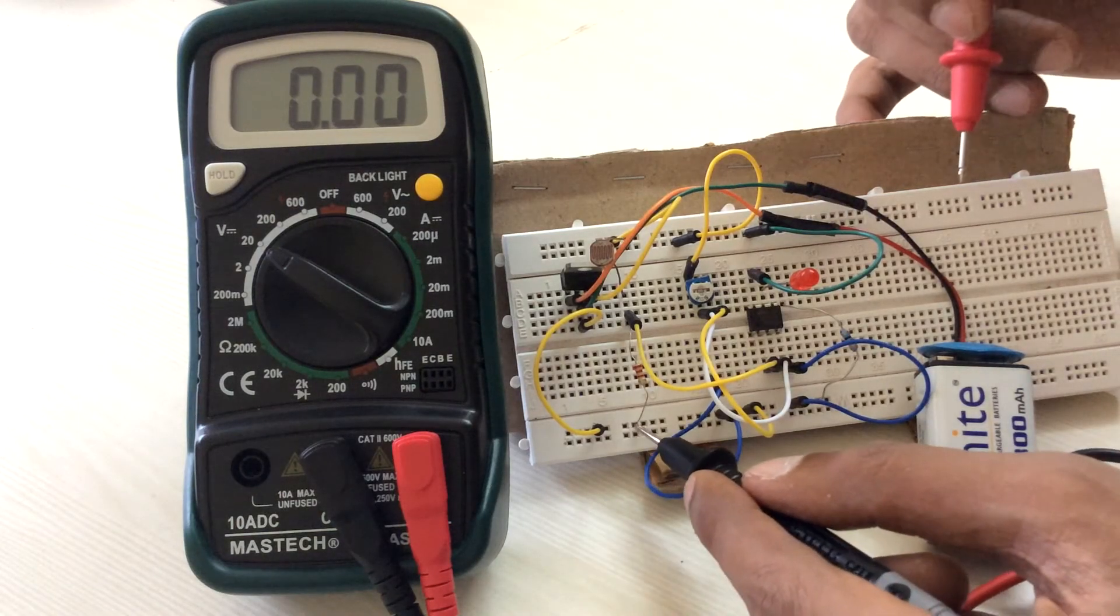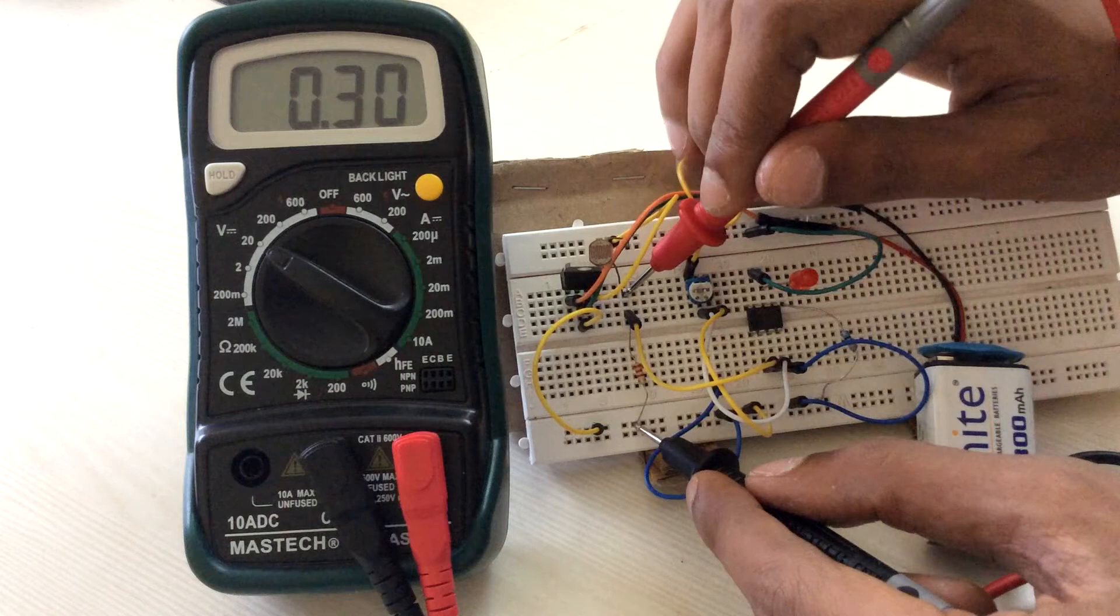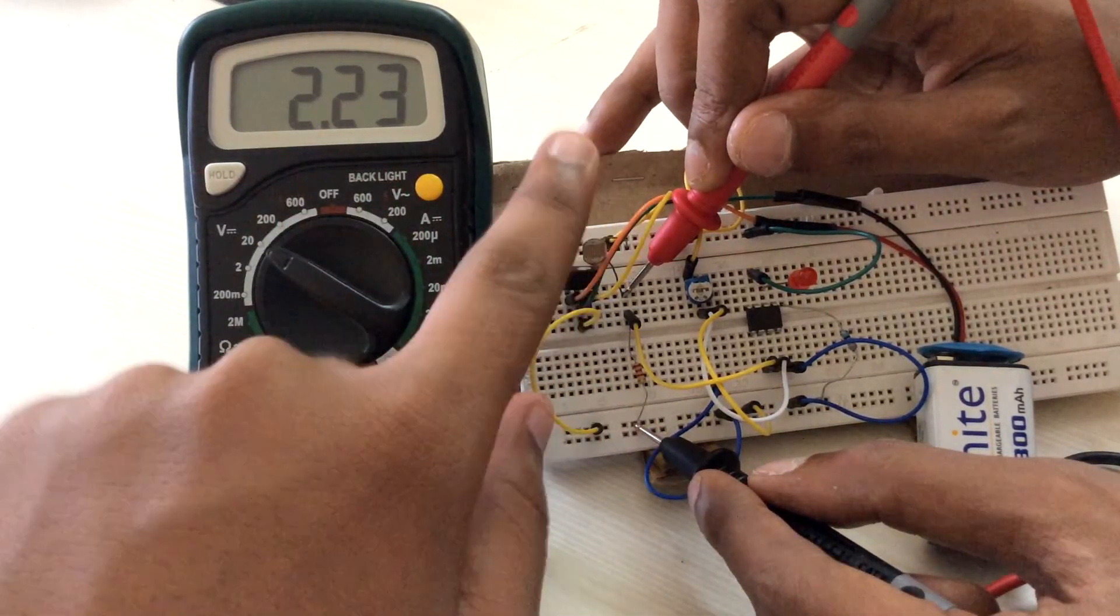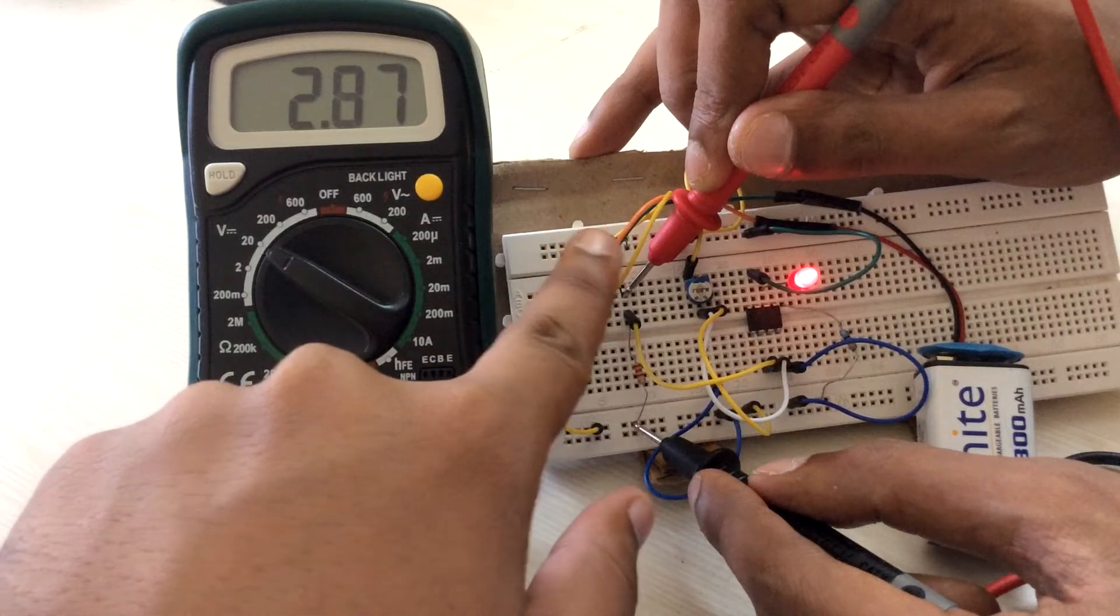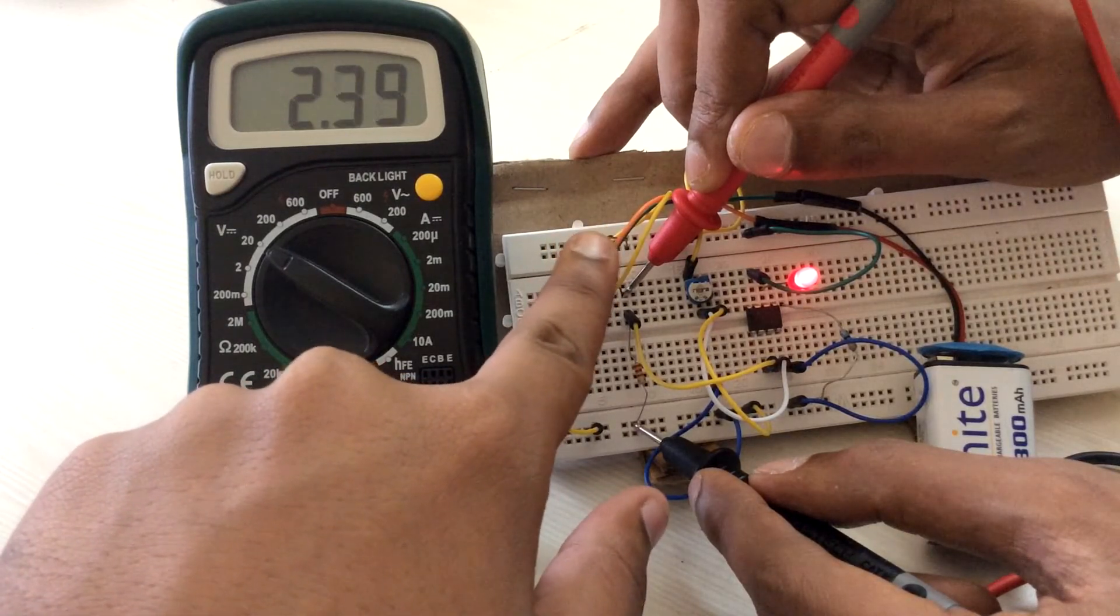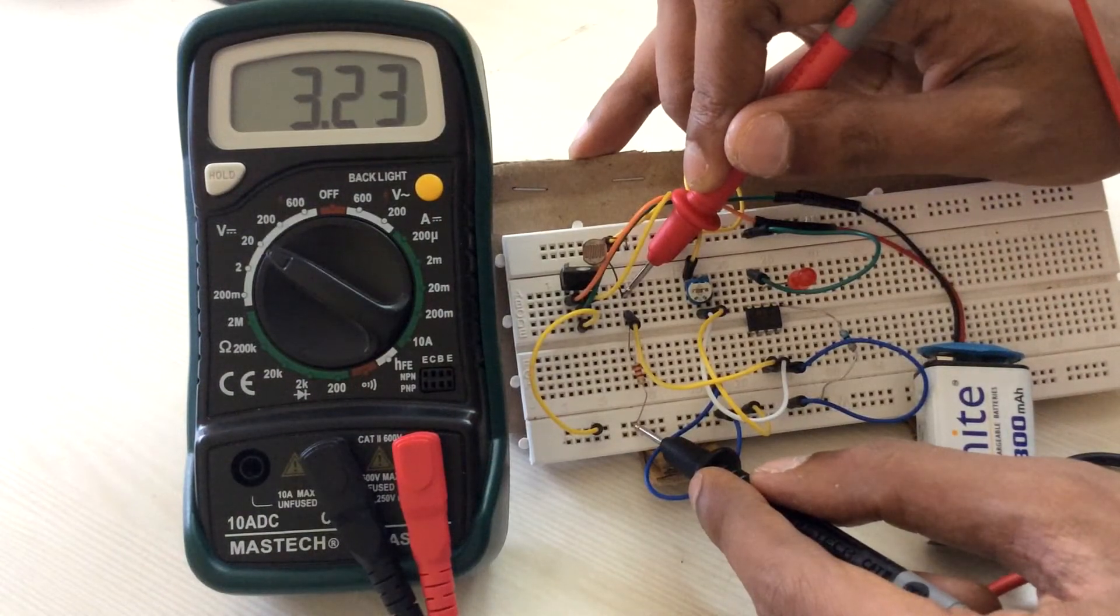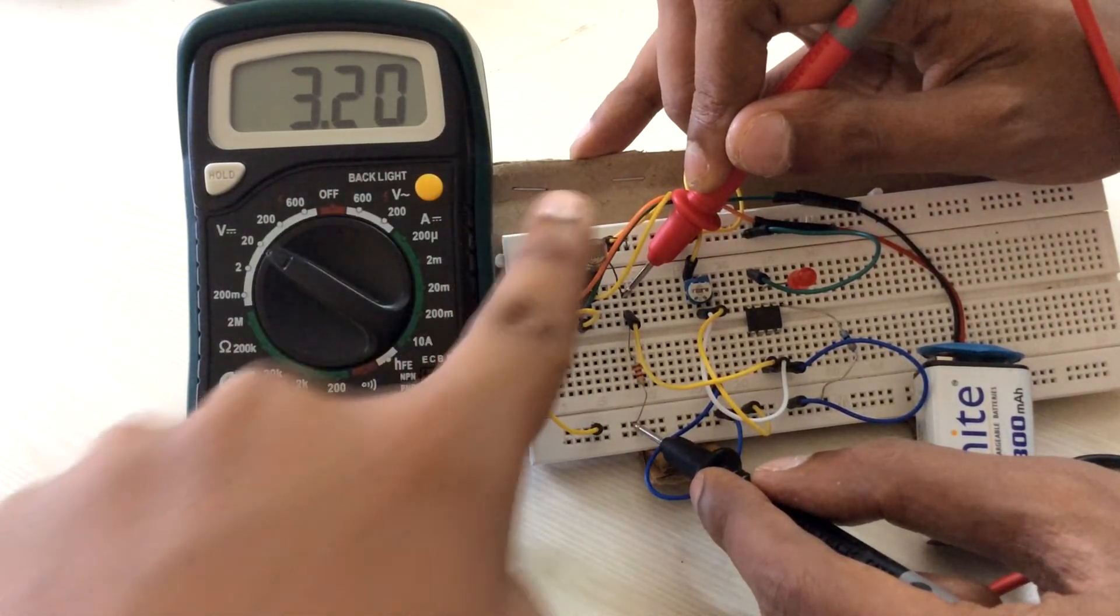Now connect your multimeter's terminals across the 2.2kohm resistor. The DMM will show some voltage. This voltage should decrease if you cover the LDR's surface with your finger. If the voltage change is significant, like 1 or 2 volts, then this part of the circuit is fine.